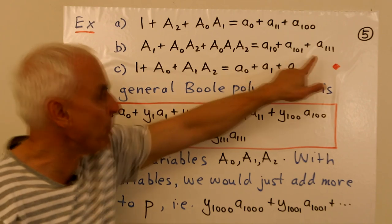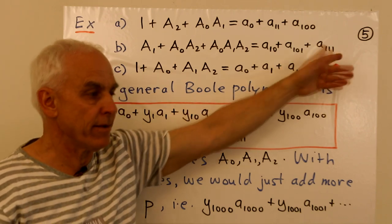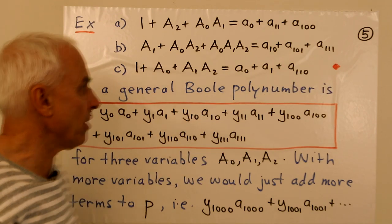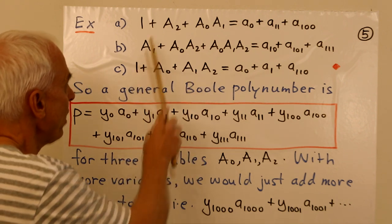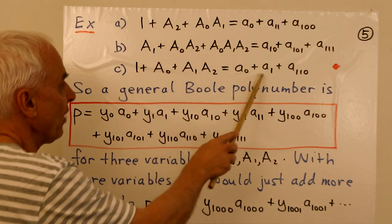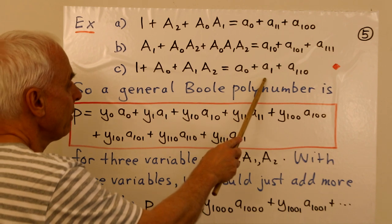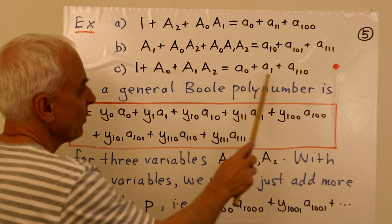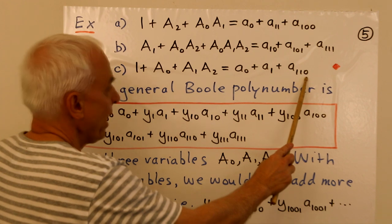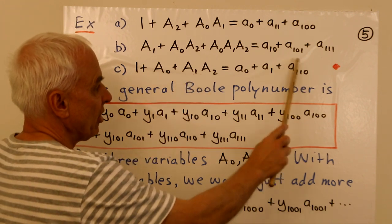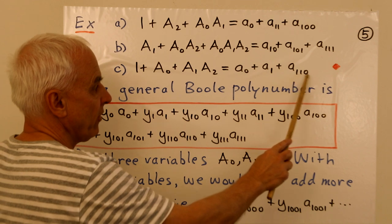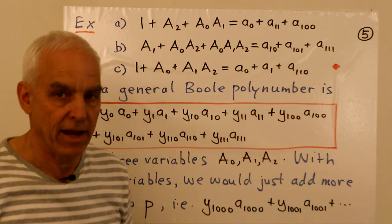How about this one? A1 + A0 A2 + A0 A1 A2. A1 corresponds to little a 010. A0 A2 is a101 because there is an A0 and there is an A2, but there's no A1. And this one here, we have all three, so that corresponds to a111. Or we would say maybe a7, because we're allowed to think about this as a binary number, which is an integer up to 7.